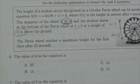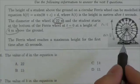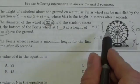What are we told here? The Ferris wheel reaches a maximum height for the first time after 45 seconds. So it takes 45 seconds to go from the bottom up to the top there.